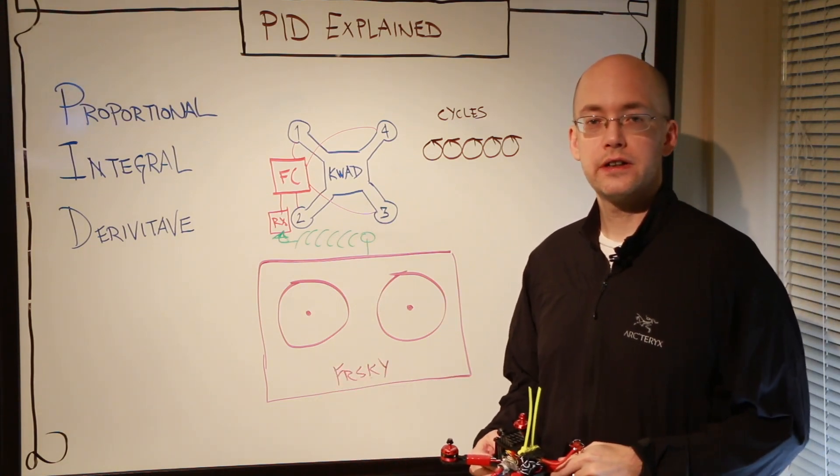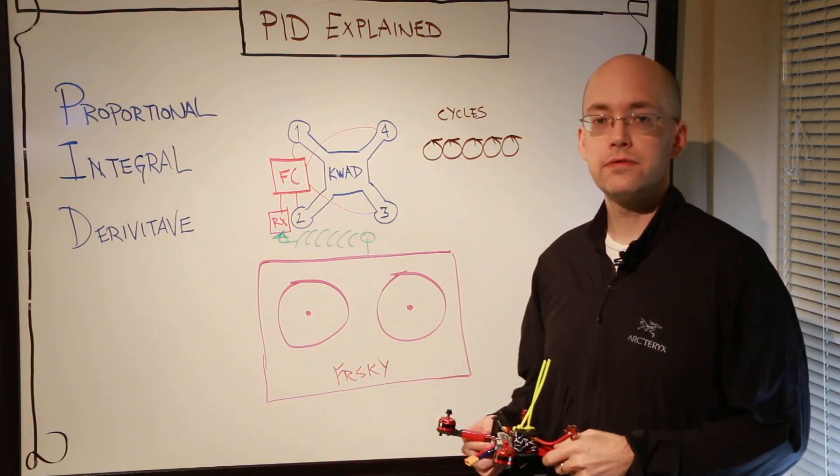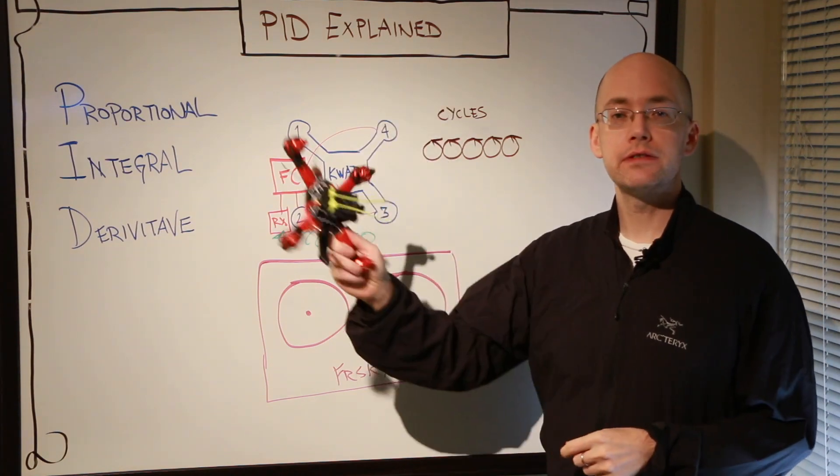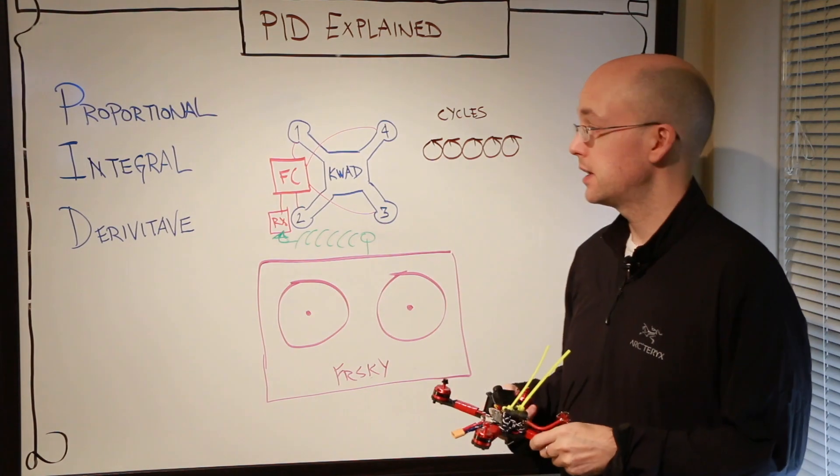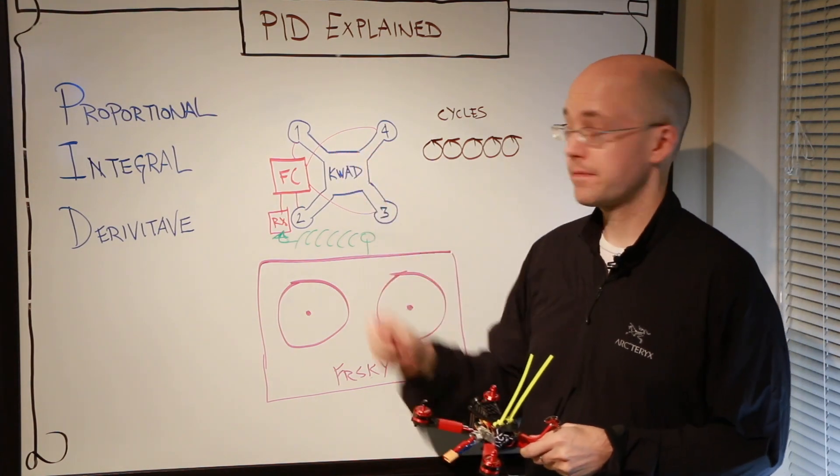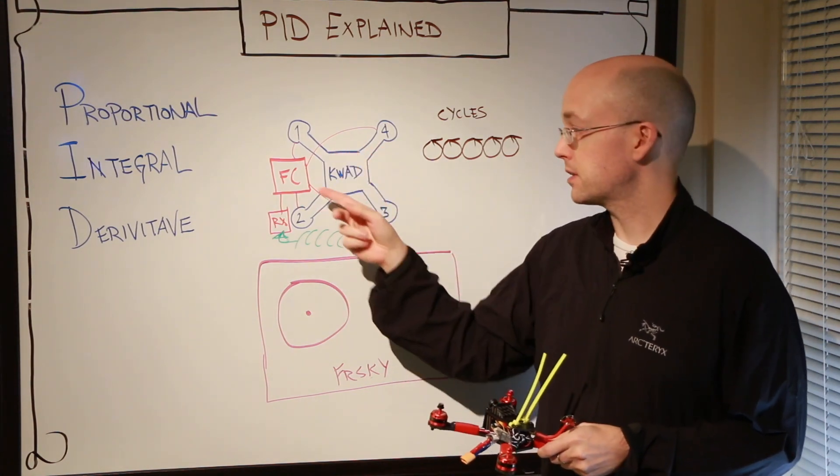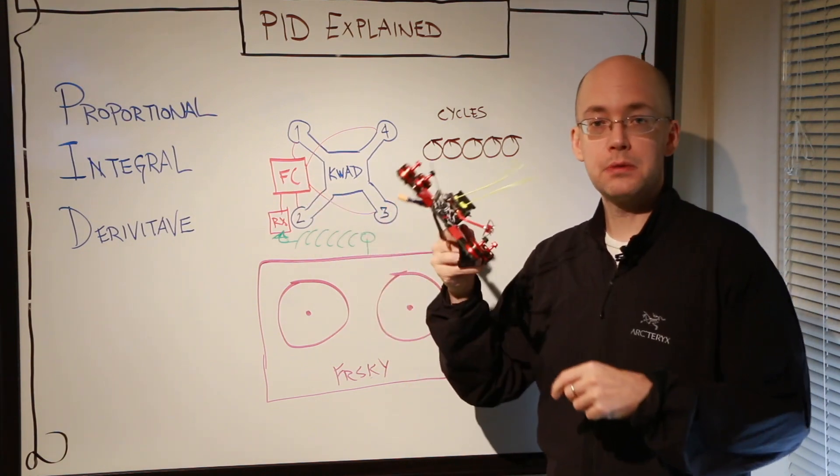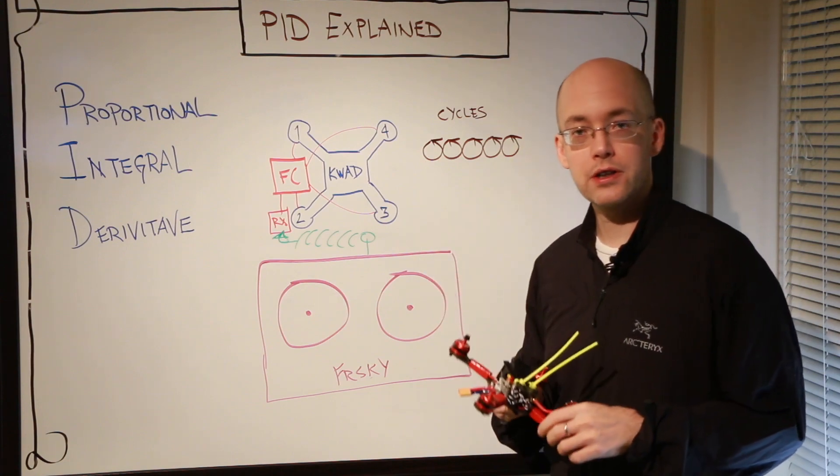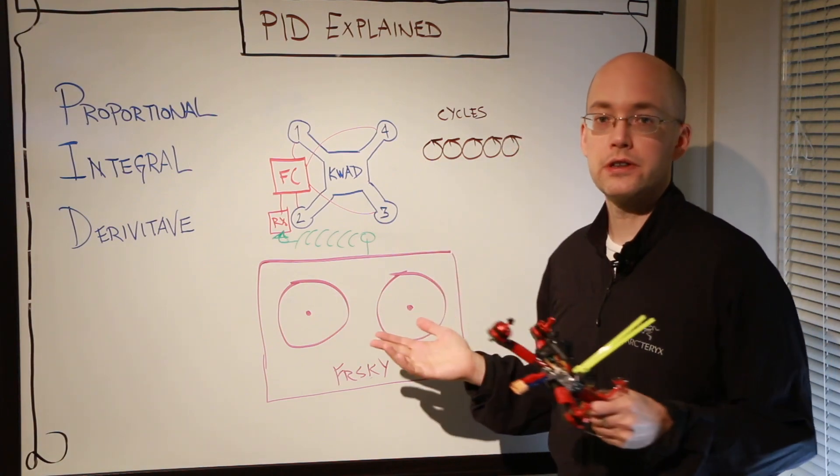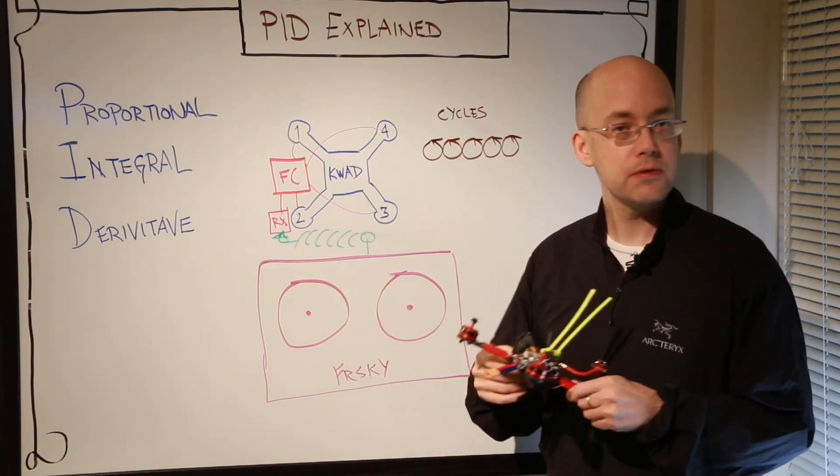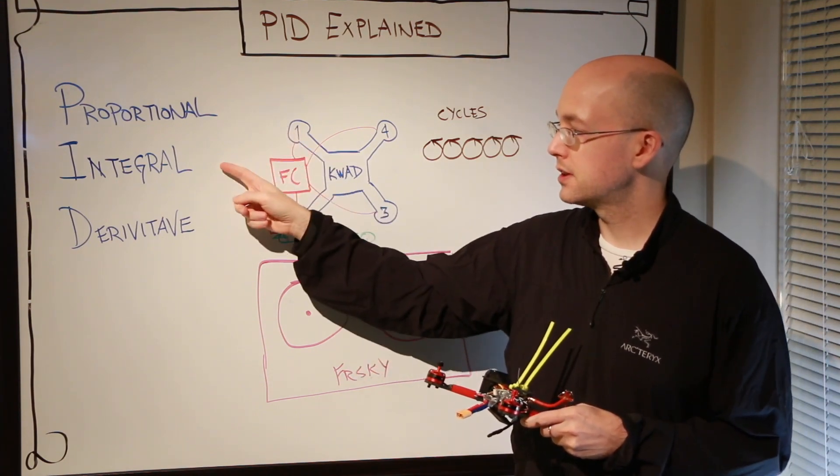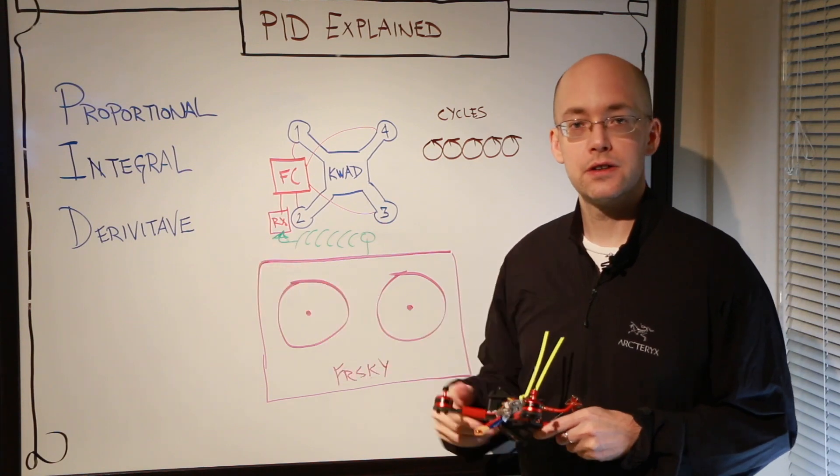Hello all, Andrew here, and what I'd like to do in this video is explain the PID for those that fly quadcopters. This is the software that runs in your flight controller that helps stabilize the flight of your quadcopter while you are doing your acrobatics, racing, or whatever you want to do with your quadcopter. The PID stands for proportional, integral, and derivative.